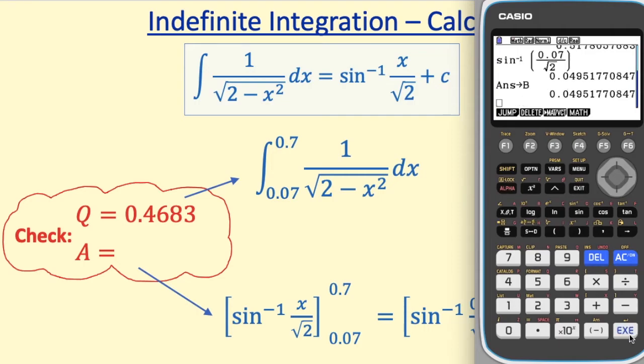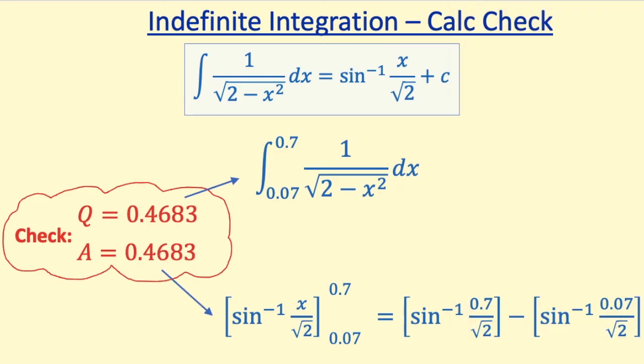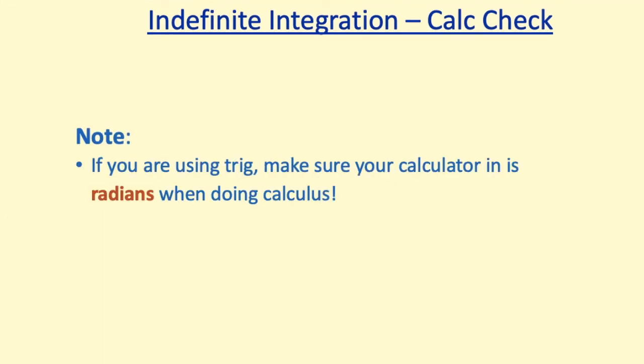And I'm sure you remember that with definite integration, we do this term with 0.7 minus this term with 0.07. So that's our alpha A minus alpha B. And look at that. That's the exact same number as we got for our question. So again, if we round to four significant figures, we're going to get 0.4683. So both question and answer are exactly the same. We could give it a big tick and we never have to look at it again.